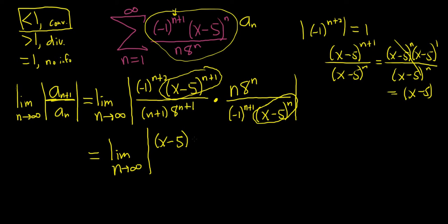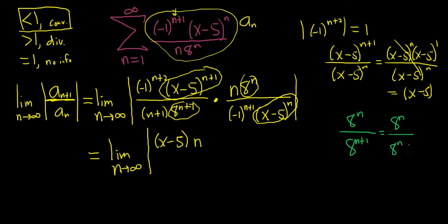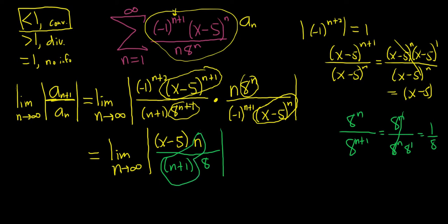We still have the absolute value of x minus 5. The n stays there. For 8 to the n over 8 to the n+1, something similar happens: we write 8 to the n+1 as 8 to the n times 8 to the 1, the 8 to the n's cancel giving 1 over 8. So we're left with n+1 and 8 on the bottom. When we take this limit, n over n+1 — the degrees are the same — so we get 1, leaving the absolute value of x minus 5 over 8.